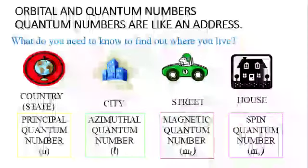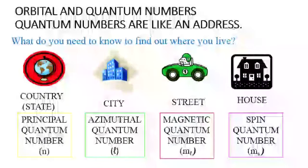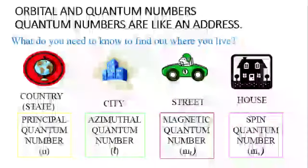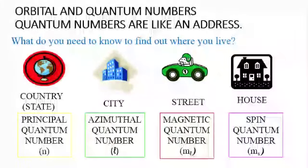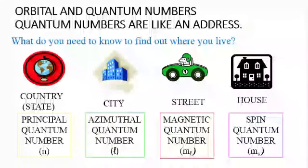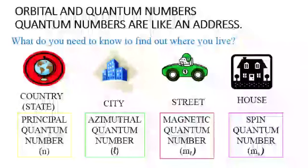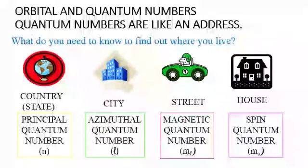When we talk about the first and main address, we talk about orbits, shells, and energy levels. Orbits, energy levels, and shells represent the first and main address of an electron. This information will be represented by the principal quantum number. Then we have the second address for the electron — the sub-shells. The sub-shell gives the second address for the electron, which is represented by the azimuthal quantum number.